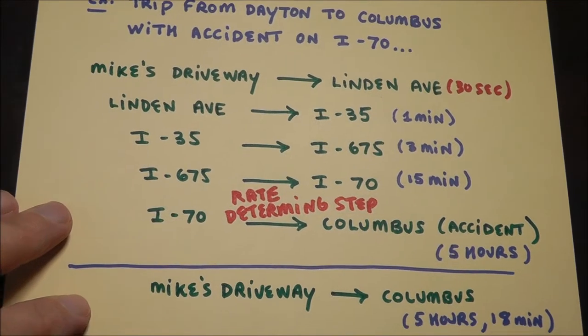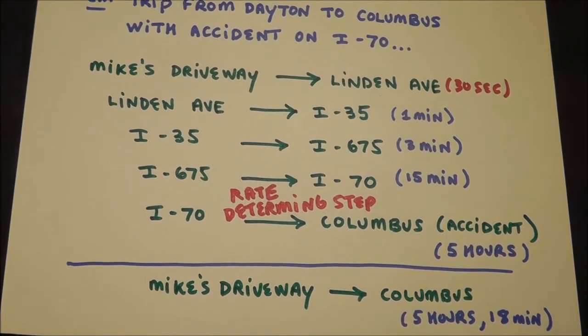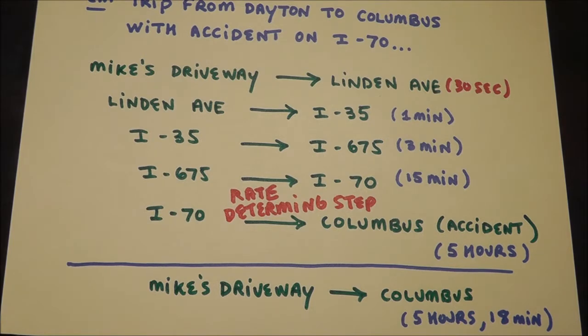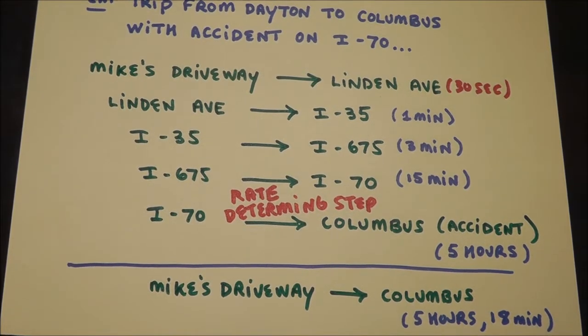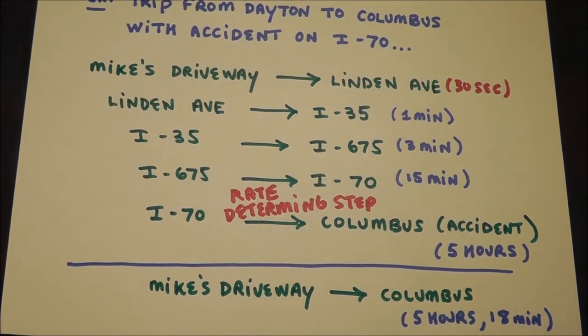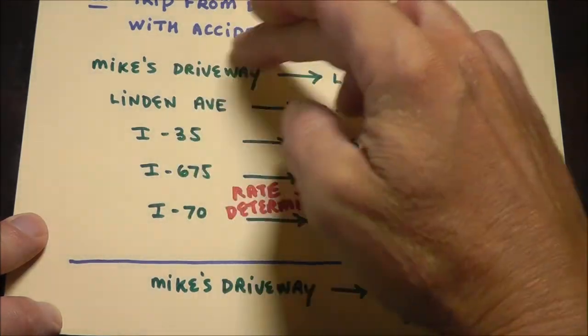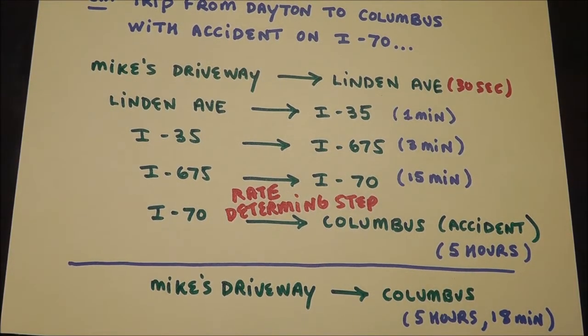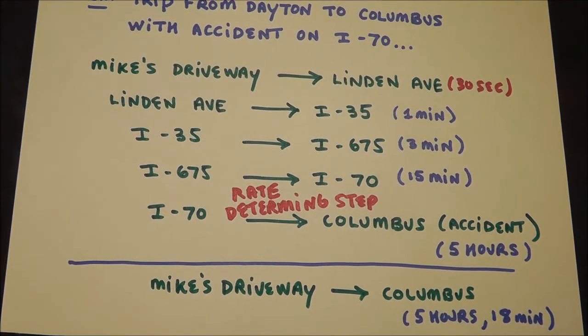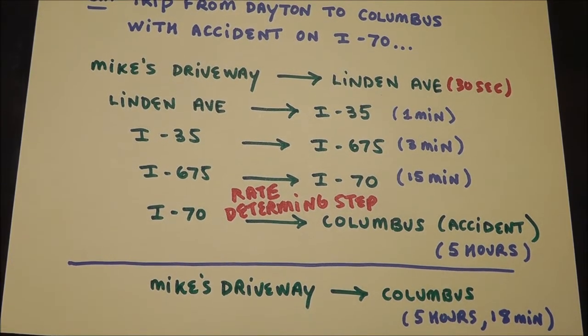I could have just said I'm gonna really really floor it from Linden Ave to I-35, it wouldn't have mattered. And that my friends is why stuff is zero order - nothing is really zero order, but if you speed up a step that does not matter, those are the kinds of things that are zero order. Usually you're gonna find out that things are first or second order and it depends on the story of the reaction and how each step proceeds.